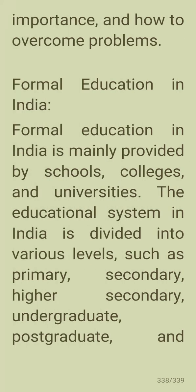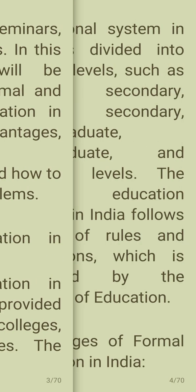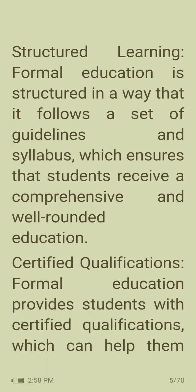Formal education in India is mainly provided by schools, colleges, and universities. The educational system is divided into various levels such as primary, secondary, higher secondary, undergraduate, postgraduate, and doctoral levels. The formal education system in India follows a set of rules and regulations governed by the Ministry of Education. Advantages of formal education include structured learning, which follows a set of guidelines and syllabus ensuring students receive a comprehensive and well-rounded education.